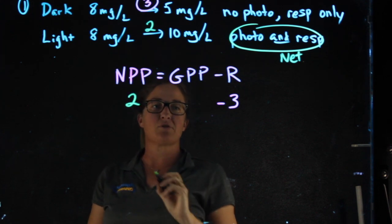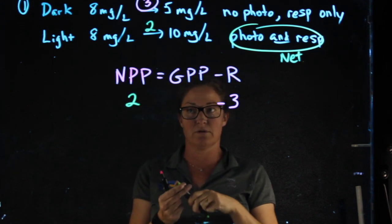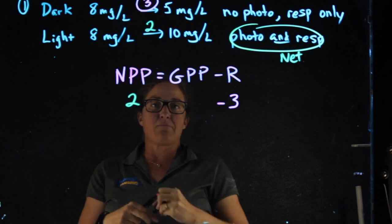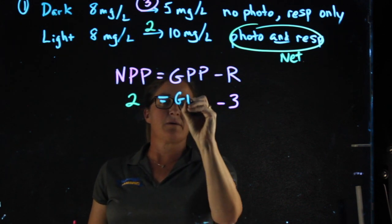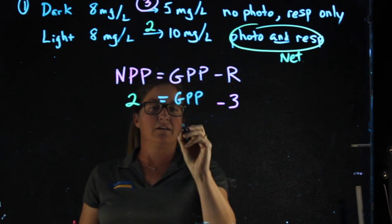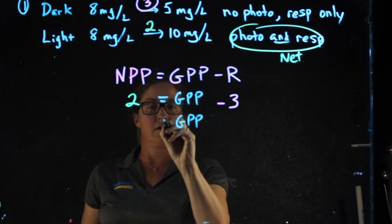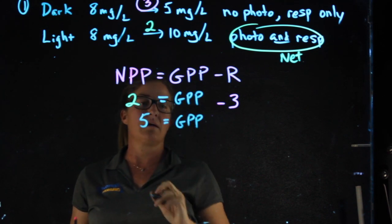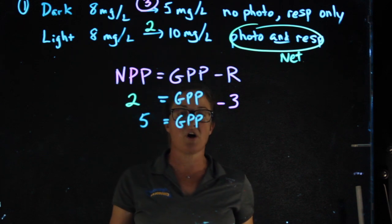giving us our net primary productivity of 2. Net primary productivity equals gross primary productivity minus R. And I can solve for the gross primary productivity of 5 milligrams per liter.